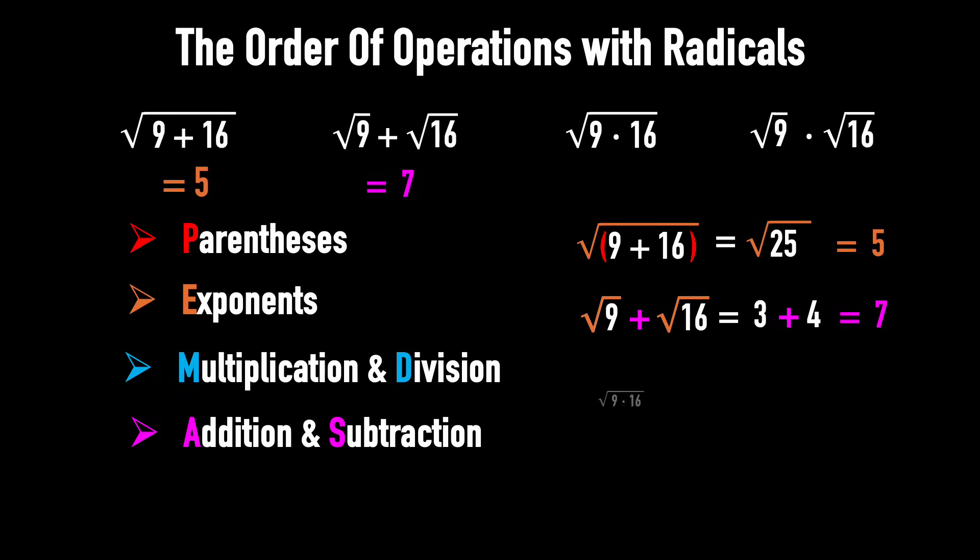Example 3. Find the square root of 9 times 16. Like example 1, the radical sign implies parentheses around the radicand. So, first, parentheses. 9 times 16 equals 144. Second, the square root of 144 is 12.